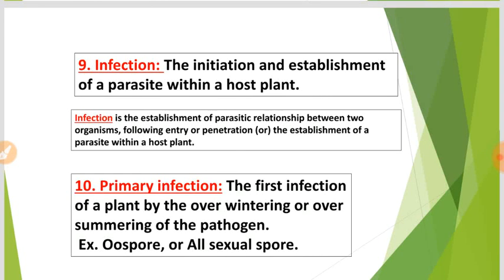Number nine: Infection. Infection is the initiation and establishment of a parasite within a host plant, or the establishment of a parasitic relationship between two organisms following entry, penetration, or the establishment of a parasite within a host plant. Primary infection is the first infection of a plant by the overwintering or oversummering pathogen.